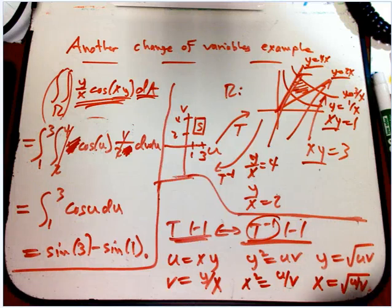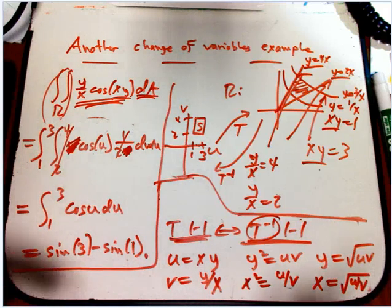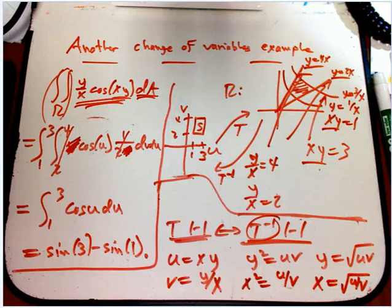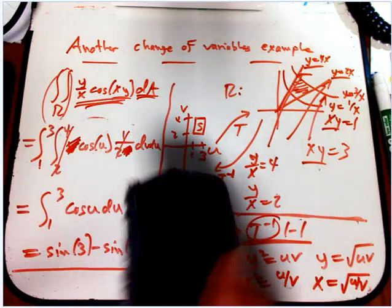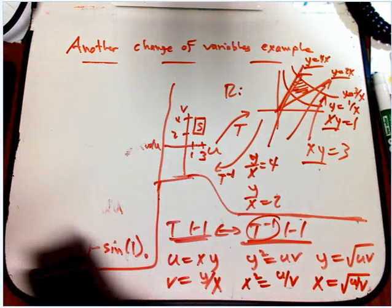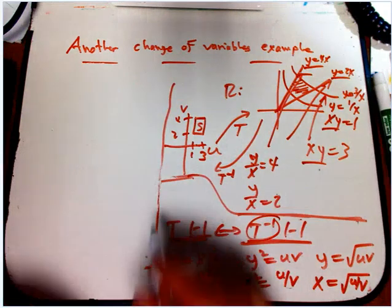So that's the double check we would want to be really careful about if we were paranoid about this change of variables. And if we wanted to,